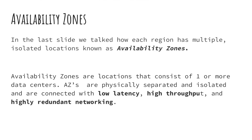Now let's look at availability zones. Each region has multiple isolated locations known as availability zones. Availability zones are locations that consist of one or more data centers — we're getting closer to where your servers are actually living. One availability zone may have one or more data centers. AZs are physically separated and isolated, and are connected with low latency, high throughput, and highly redundant networking.